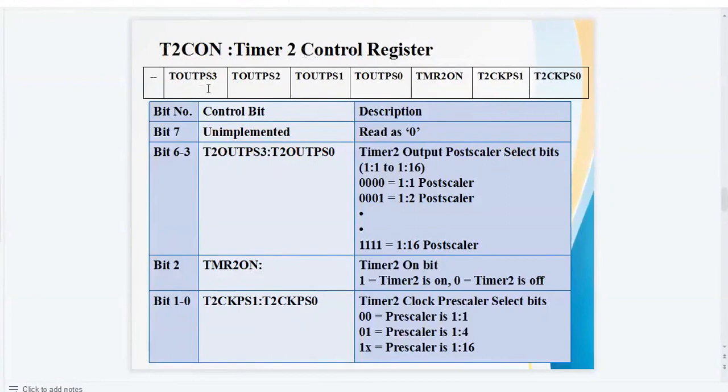So timer 2 control register, it is an 8-bit register. Bit number 3 to 6 are the timer 2 output post-scaler select bits. Then bit number 2 is the timer 2 on bit. If this bit is set to 1, timer 2 is on. If this bit is set to 0, timer 2 is off. So by using this bit, we can turn on and off the timer. Then bit 1 to 0 are timer 2 clock pre-scaler select bits.